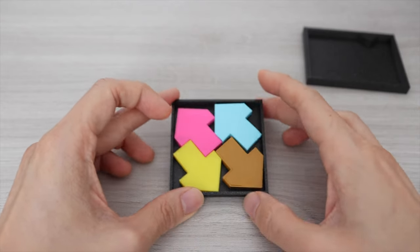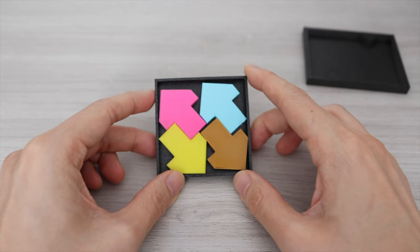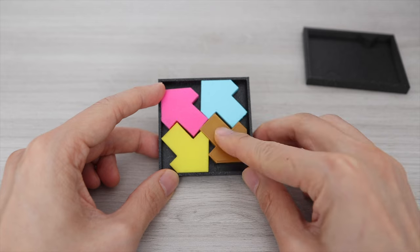Like this we can place the fourth arrow into this place and we have solved the side with the square tray. Very cool.